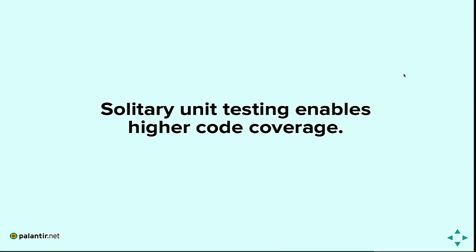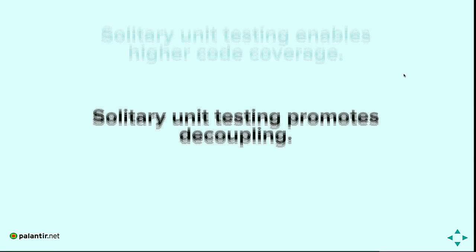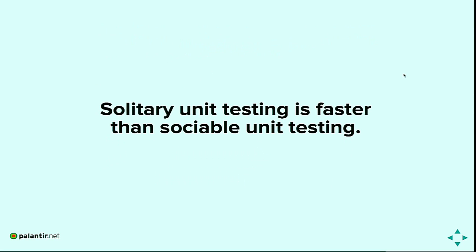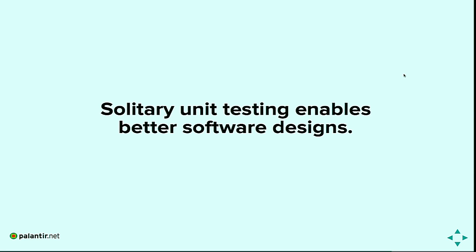Motivations. Solitary unit testing enables higher code coverage because you have control over all side effects and shared state. This lets you configure which lines of code get run and be very specific about it. It promotes decoupling — it's painful when you have closely coupled code. Solitary unit testing makes it very clear where the seams are in your code. If it's easy to test, it's more likely to be decoupled. It's also faster than sociable testing — with thousands of lines of code like Drupal, a solitary test suite gives you quick feedback.